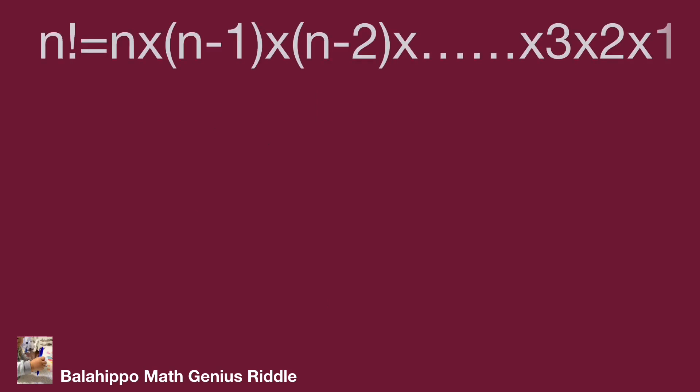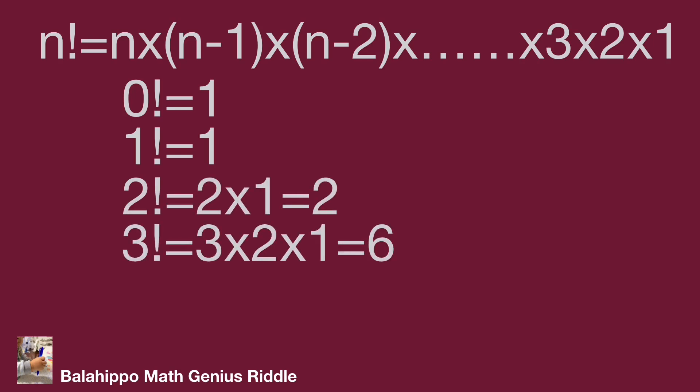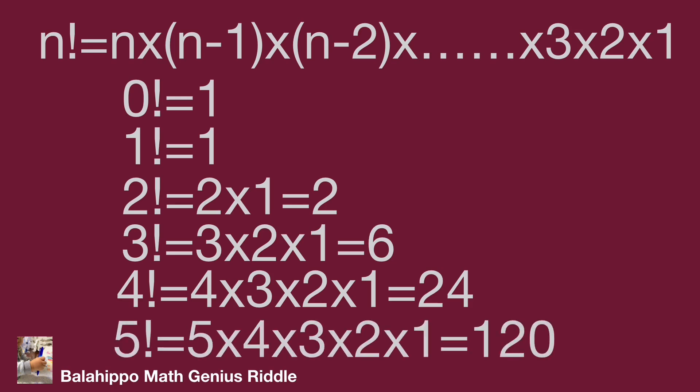n factorial equals n times (n minus 1) times (n minus 2) and so on, down to 3 times 2 times 1. Take the example: 0 factorial equals 1, 1 factorial equals 1, 2 factorial equals 2, 3 factorial equals 3 times 2 times 1 equals 6, 4 factorial equals 4 times 3 times 2 times 1 equals 24, and 5 factorial equals 5 times 4 times 3 times 2 times 1 equals 120.